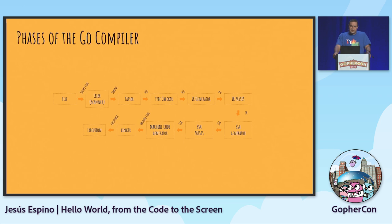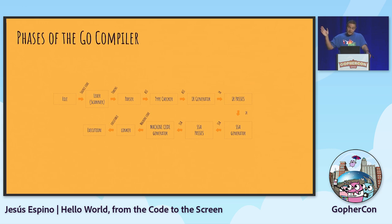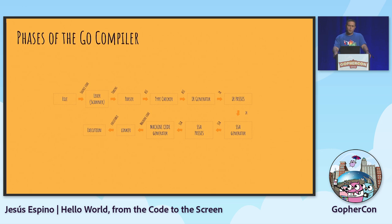These are the phases of the Go compiler. Don't pay too much attention to this right now - we are going to see this slide over and over again during the talk. It's just a map to show you where we are during the talk.